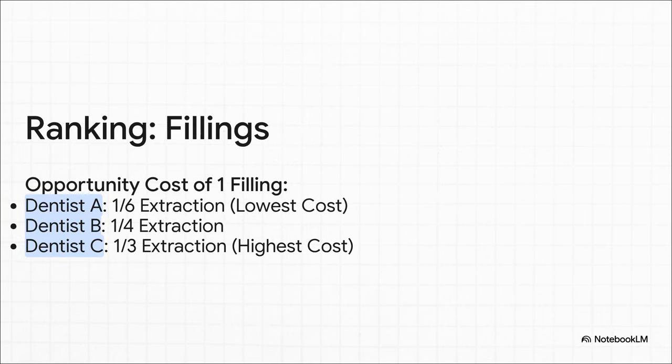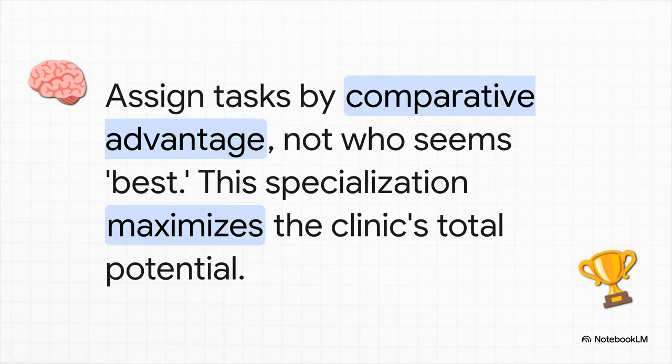Okay, but now let's flip it. What about the cost of doing fillings? For Dentist A, doing one filling costs them only a tiny fraction, one-sixth of an extraction. For Dentist B, it's a quarter of an extraction. And for Dentist C, it's a third of an extraction. Whoa, look at that. The ranking is completely reversed. Dentist A has the lowest opportunity cost for fillings. They're the most efficient choice for that task.